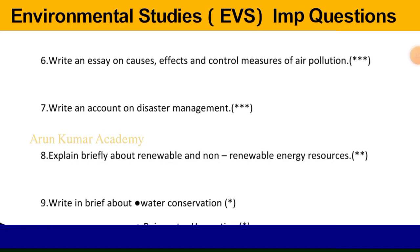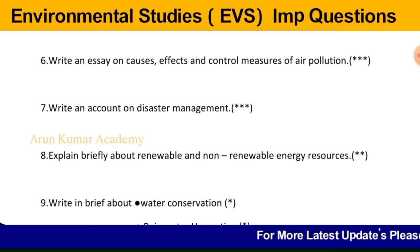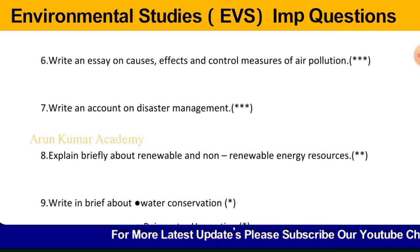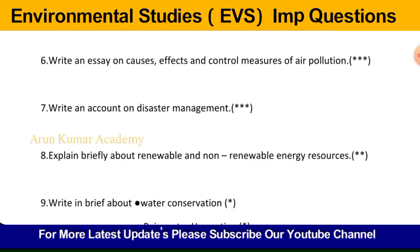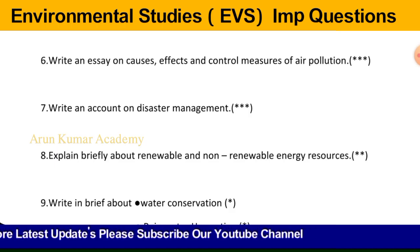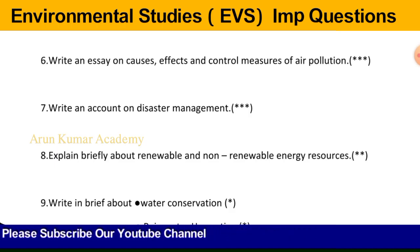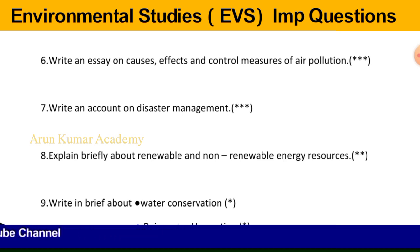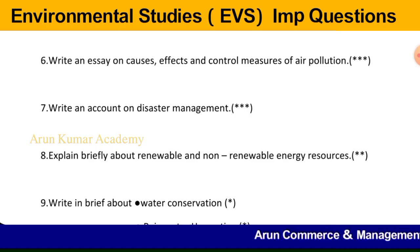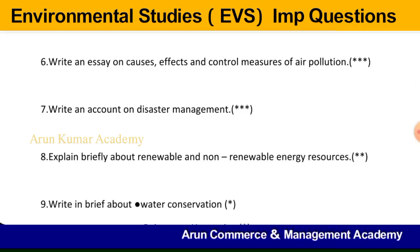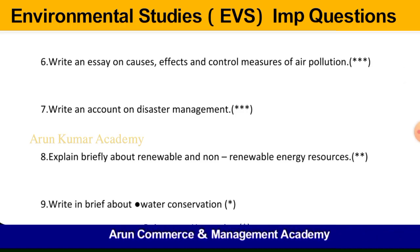Question number seven: write an account on disaster management. Write in detail about the definition and objectives of disaster management. Disaster management deals with various types of disasters and measures of avoiding risks. It is a continuous process involving groups, individuals, communities, government, and non-government organizations. Objectives include protection of life and property, protection of environment, and creating awareness. Also write about floods, earthquakes, and cyclones.